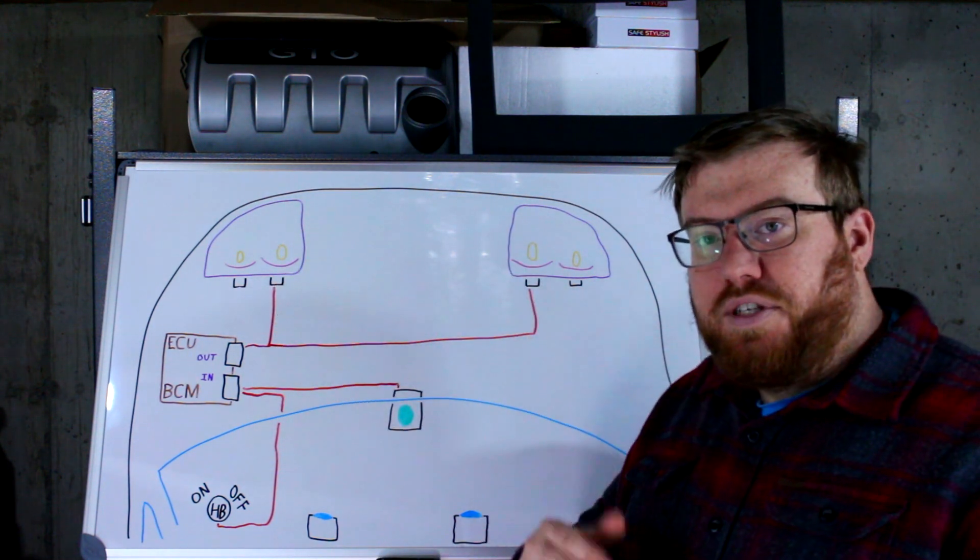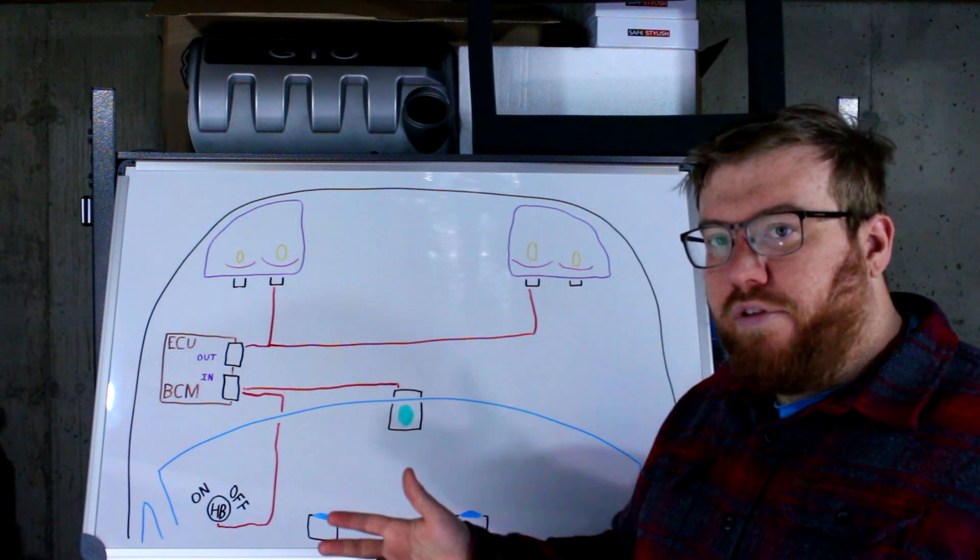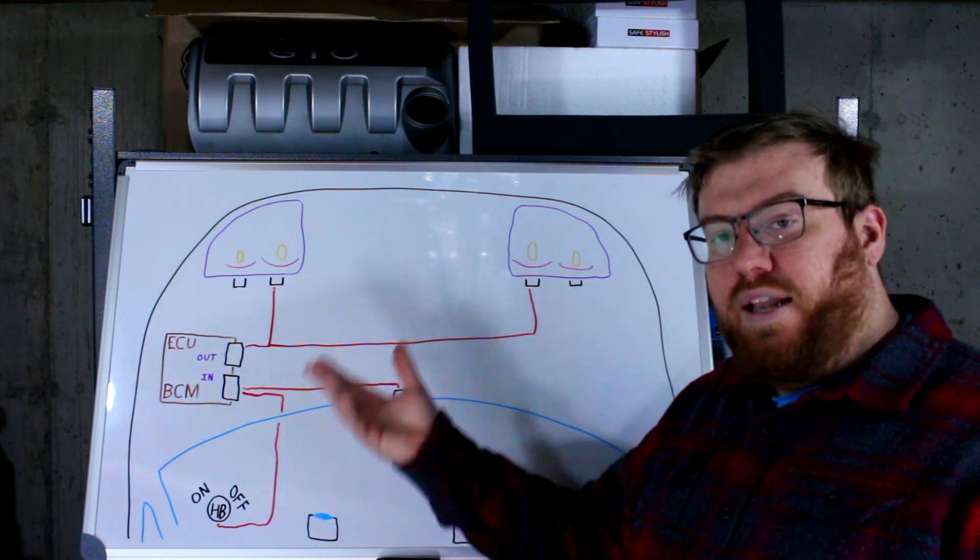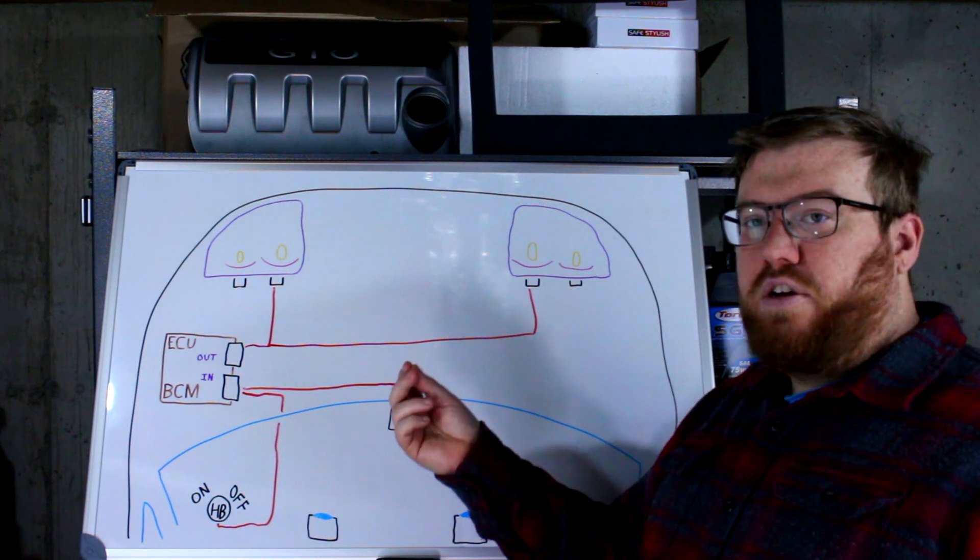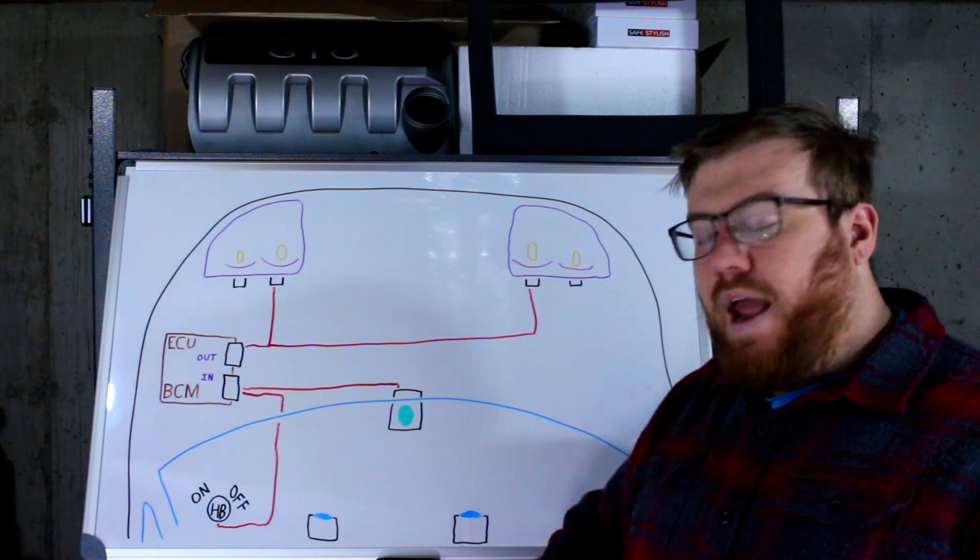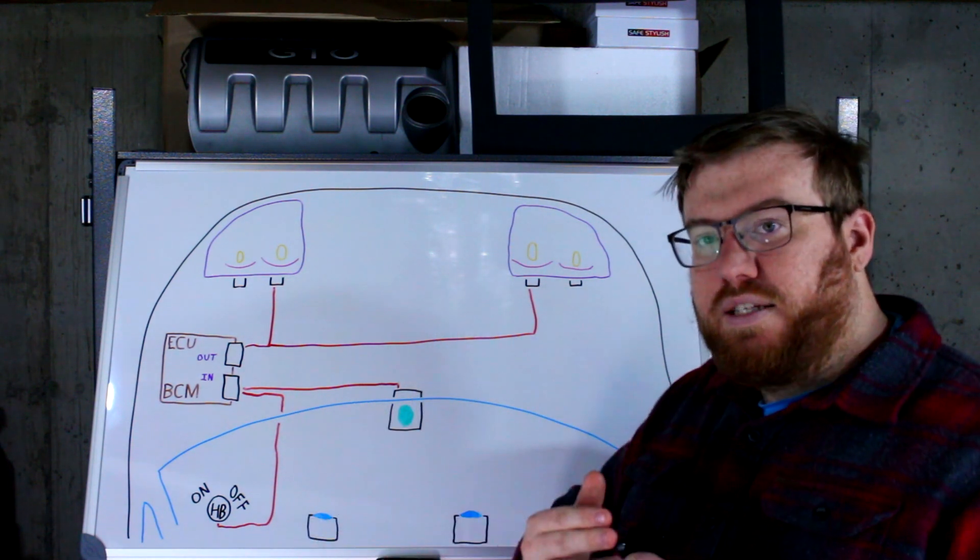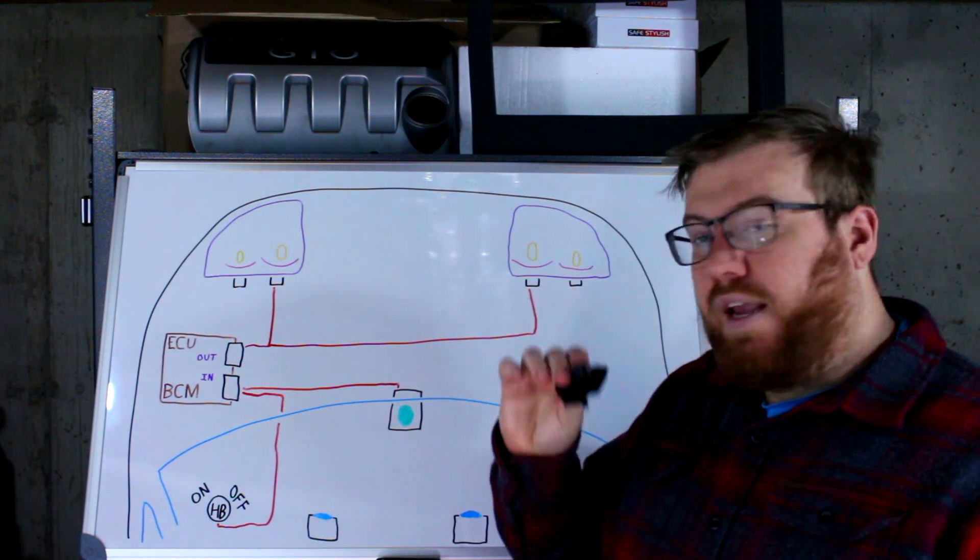If headlights coming towards us were the only thing we had to consider, then maybe we'd be able to get away with that, but that doesn't account for taillights that are ahead of us. Taillights are comparatively more dim and they're red, so less light is getting through to this sensor, making it pretty much useless.